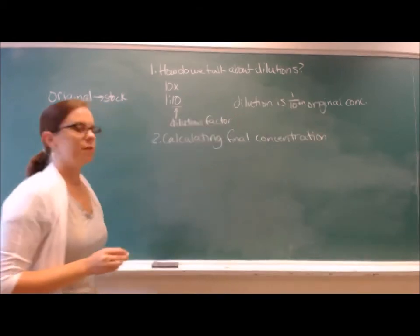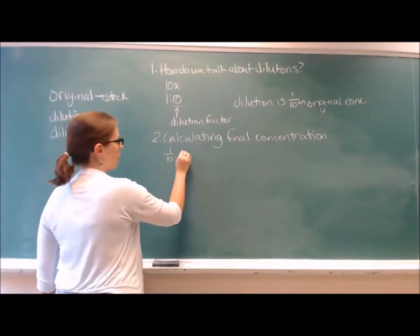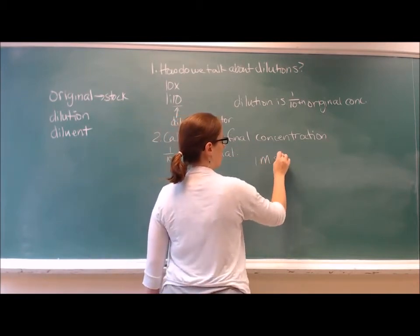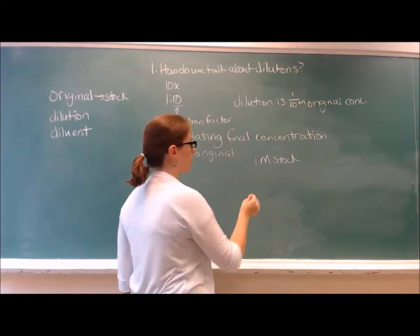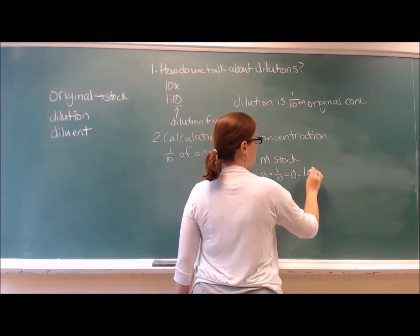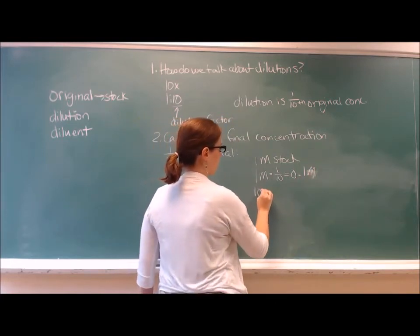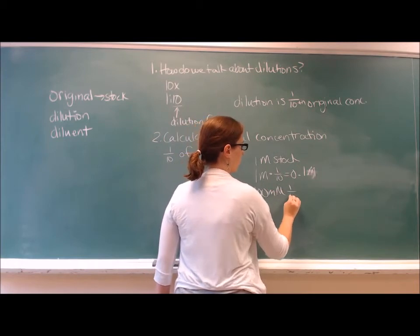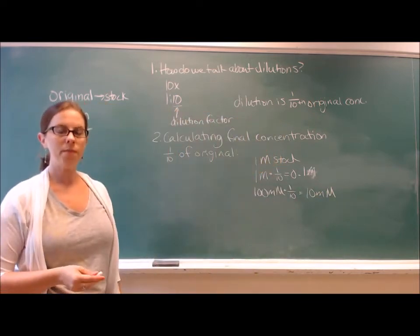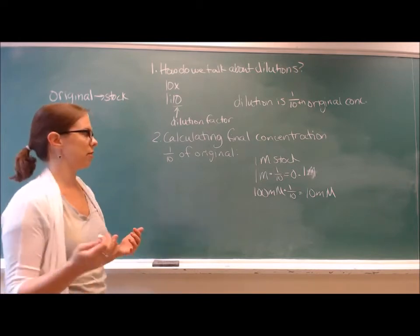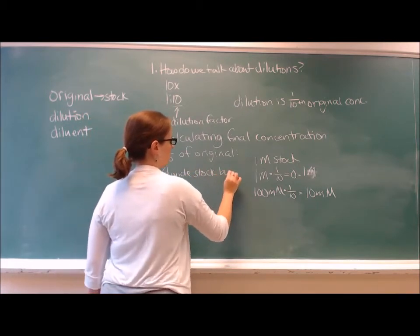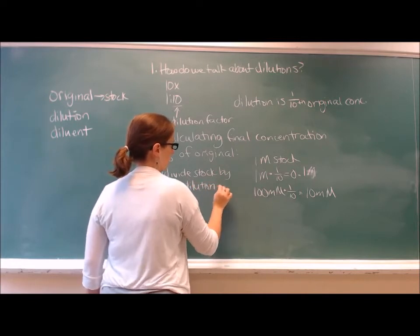We'll keep it simple for the first example. If we want 1 tenth of original, and we have a 1 molar stock, then in order to figure out the final concentration, we say 1 molar times 1 tenth equals 0.1 molar. Similarly, if we start with 100 millimolar, and we want a 1 to 10 dilution, then we'll end up with a 10 millimolar final concentration. So essentially, you're dividing the stock by the dilution factor.